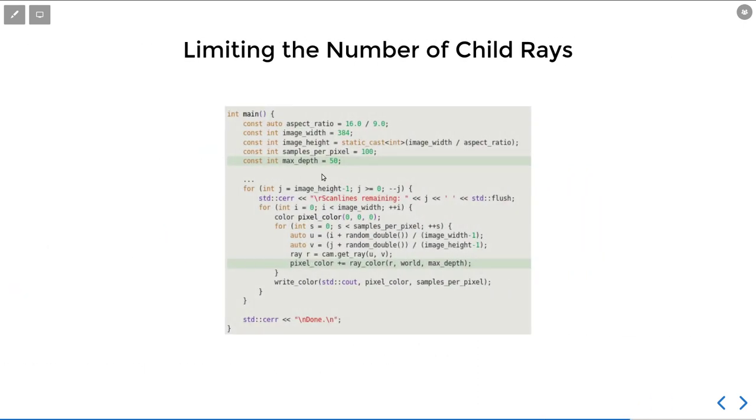Another thing we need to have is some limitation on the number of recursion depths. Because if a ray just bounces around forever, then that can cause a stack overflow. So we need some kind of recursive depth to solve this problem.